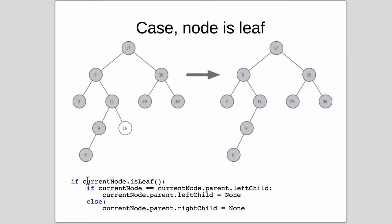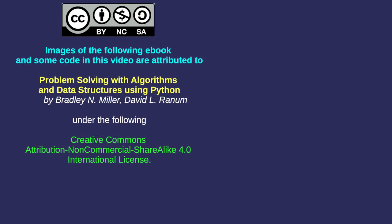Basically the code looks like this. It's just an if the current node is a leaf. If the current node equals the current node parent dot left child, that's asking is the current node equal to the left child of the parent of itself. This basically is left child. If it is, then it's going to set that left child of the parent to none. Else it's a right child, it's going to set the right child to none.